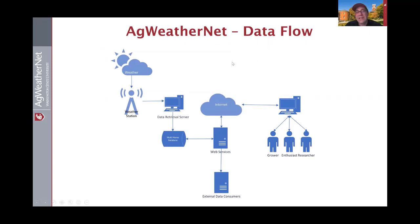This is a high-level look at how the data flows. A weather station observes sensor values out in the field. A tier one station samples every five seconds and summarizes that as a 15-minute data record. A tier two station looks every one minute and also creates a 15-minute record. It's pulled through our data retrieval server into a database existing both inside WSU and in the cloud, made available by web services to growers, weather enthusiasts, researchers, students, and external consumers such as the WSU DAS system and the National Mesonet Program.